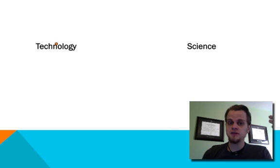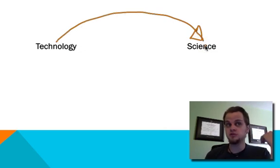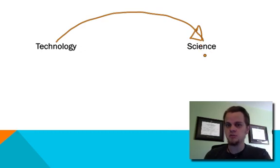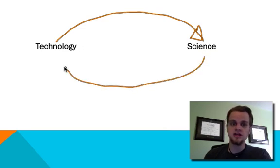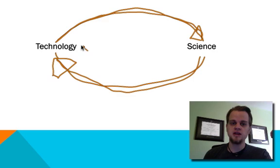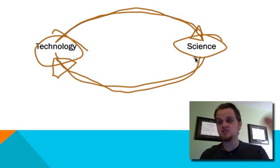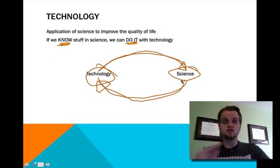Technology is super important to science. The more technology you have, the better your science is going to be, because you'll be able to do more computing and create bigger particle accelerators, and so you get more science. And since you have better science, you can create better technology. Technology is dependent on science and science is dependent on technology — it's a whole snowball effect.